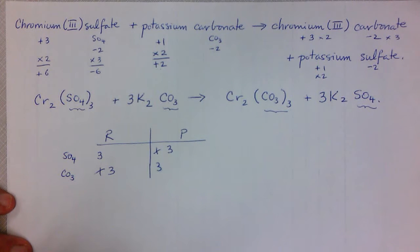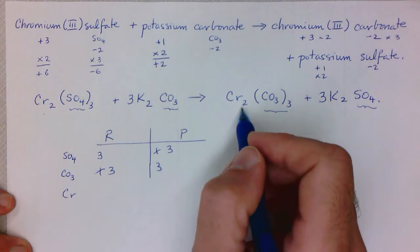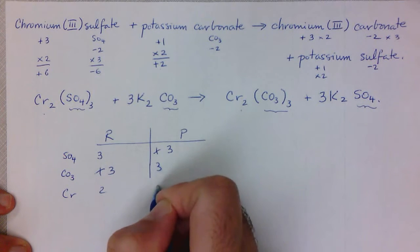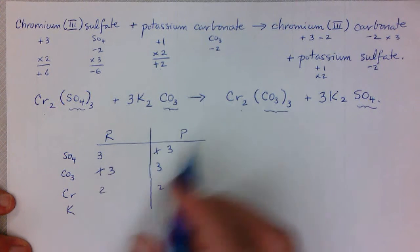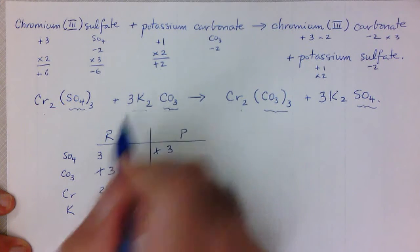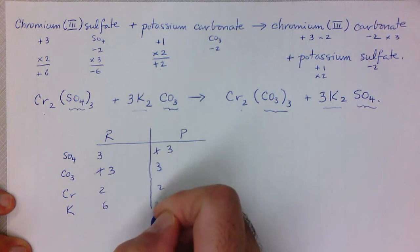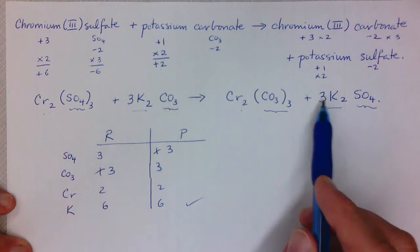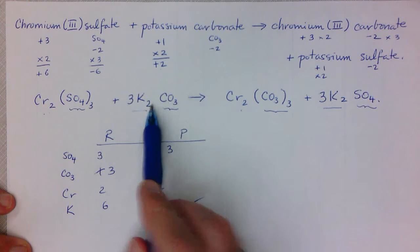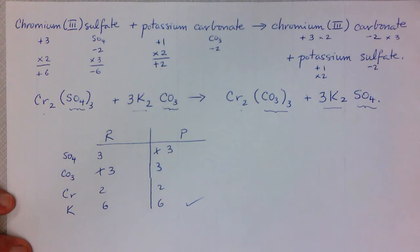Now let's check chromium: we've got two on the left and two on the right, so that's already balanced. For potassium: three times two gives six on the left, and three times two gives six on the right — already balanced. Let's do a quick final check: two chromium, two chromium; three SO₄, three SO₄; six potassium, six potassium; three carbonates, three carbonates. There we have it — our balanced chemical equation.